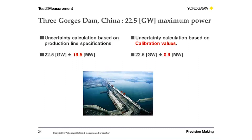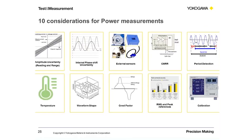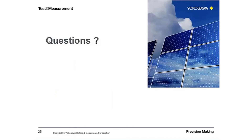It's nice that you tied this back to where we started, Michael. We've covered 10 key considerations for power measurements: uncertainty in voltage, current, and power amplitudes; effects of internal phase shift uncertainty; effects of sensors and probes; CMRR; importance of period detection; validity conditions for uncertainty specifications such as temperature, waveform shape, and crest factor; the impact of RMS versus peak range specifications; and finally how calibration helps us verify instrument reliability. Thank you for joining us today — we'd love to take any questions now.